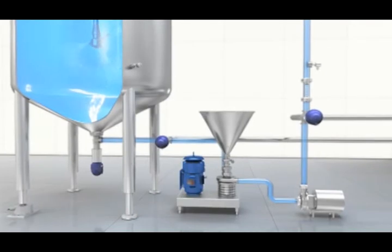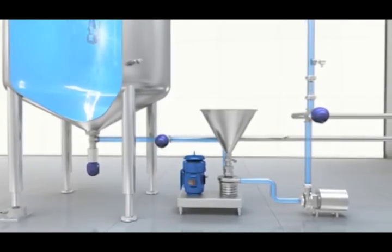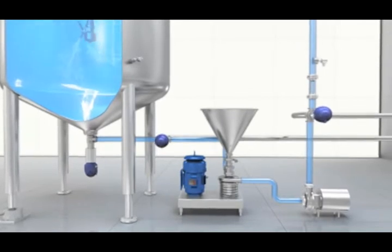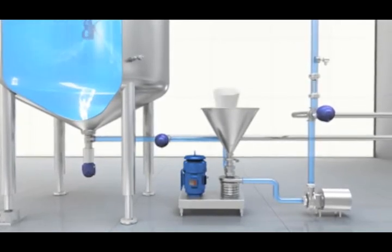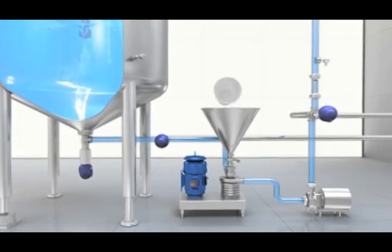The Rotary Jet Mixer ensures the most effective and fast powder dispersion possible when powder is added to the tank, either directly through the tank cover or more effectively through a powder mixer in the circulation loop.